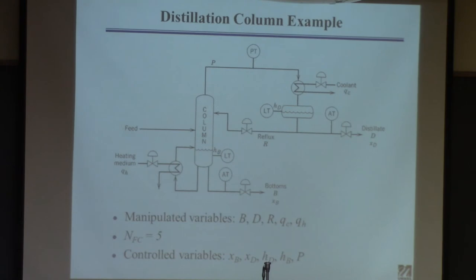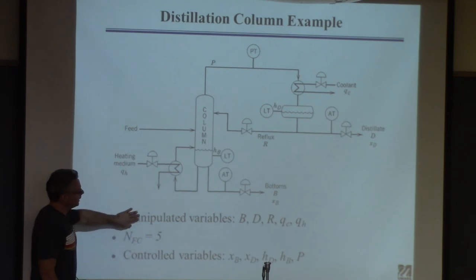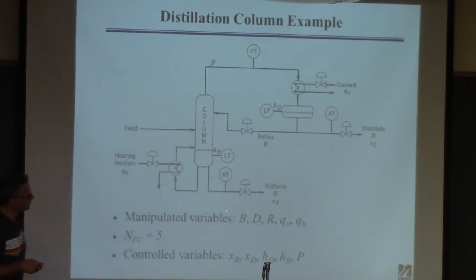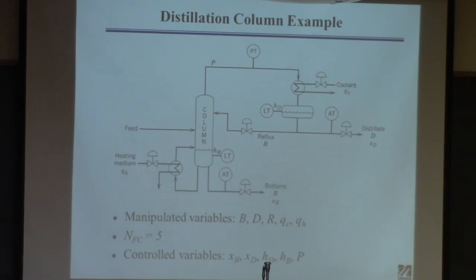One of the major control problems is maintaining inventories all over the plant. A typical plant has more than one column, maybe more than one reactor, exchangers, flash drums — lots of inventories. Looking at what we can manipulate: bottoms flow, distillate flow, reflux flow, coolant flow or duty, and heating duty. It turns out there are five degrees of freedom here, which is why we have five manipulated inputs. If there were eight degrees of freedom, we could choose eight.